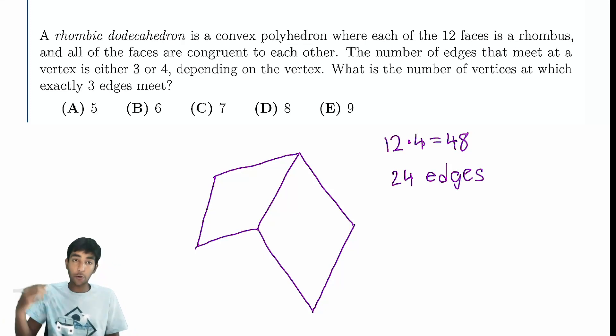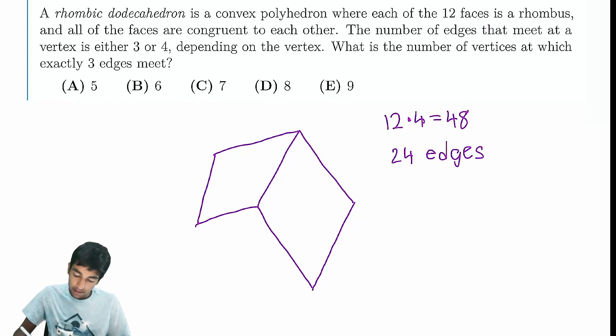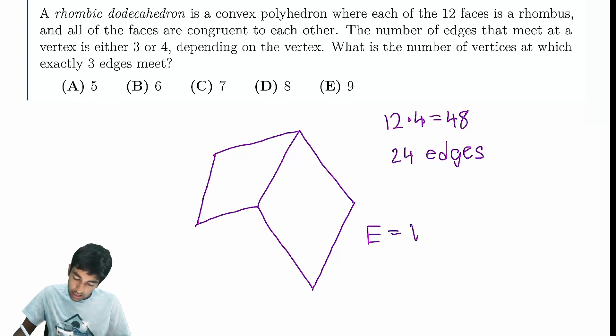12 faces, 24 edges. If you know Euler's polyhedron formula, you need to use that. It says E = V + F - 2. So there's 24 edges, so we have 26 equals the number of vertices plus the number of faces. The number of vertices is just 14.